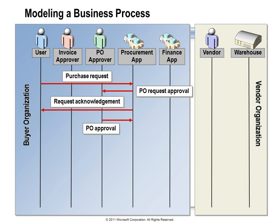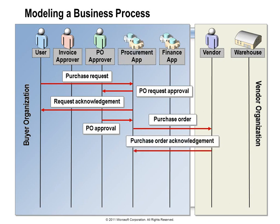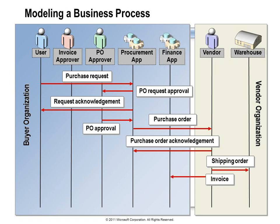Now that the procurement system has approval, it is going to send a purchase order to our vendor, and our vendor is going to respond acknowledging they received the order. At this point, if you needed to know anything about this purchase order, you could ask the procurement app — it knows everything. Then our vendor sends a message to their warehouse to ship the order and follows up by sending an invoice to our finance system. But our finance application really doesn't know anything about this purchase order, so our purchasing data is divided between two systems.